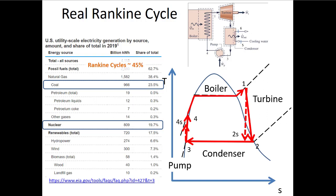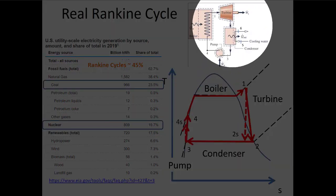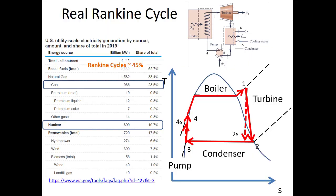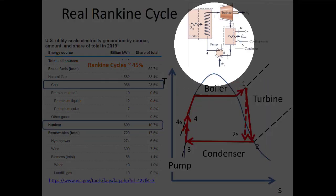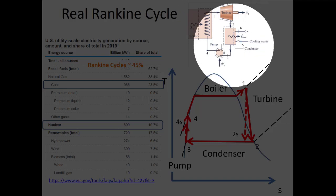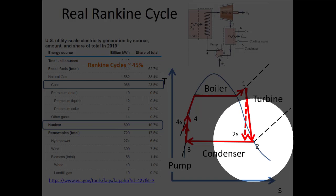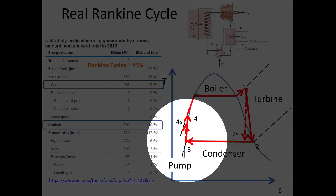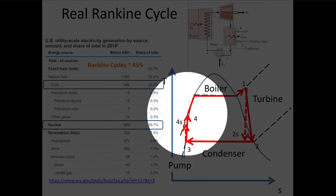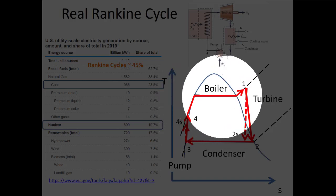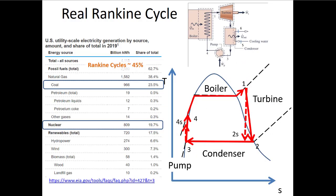We can draw the Rankine cycle on a TS diagram. The workhorse — the purpose of doing a Rankine cycle — is to generate power in the turbine. The rest of the processes, the condenser, the pump, and the boiler, are only there so we can get back to the inlet of the turbine. We go through the turbine where entropy increases, condense back to liquid, use a pump to increase pressure, then add heat to boil the water and get back to the turbine inlet.